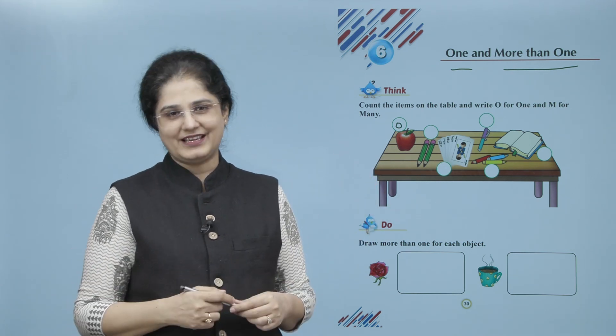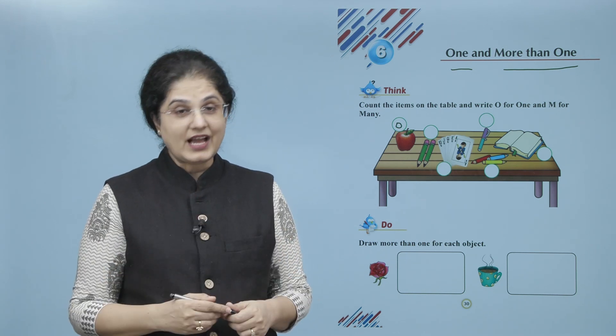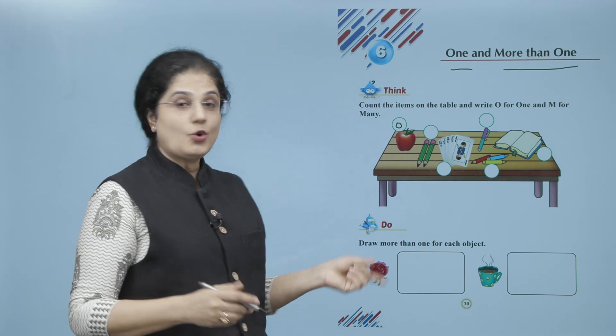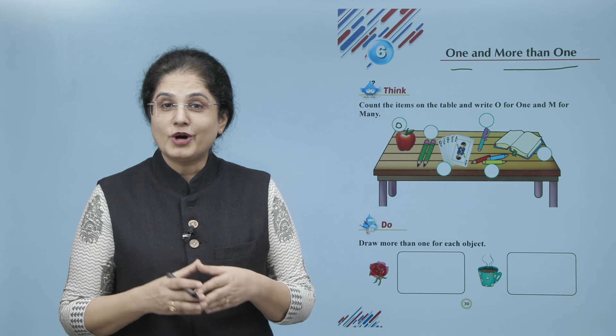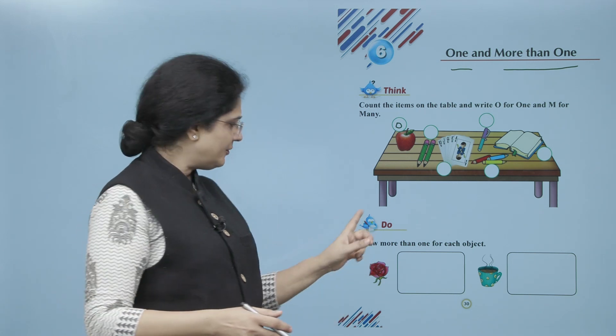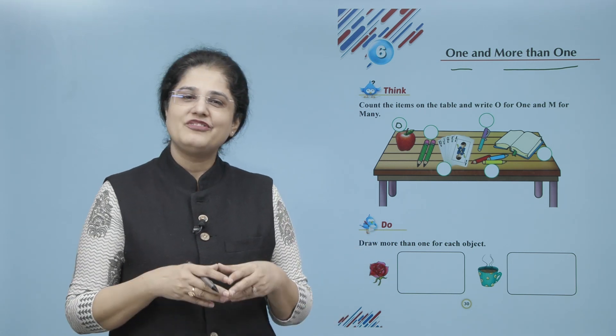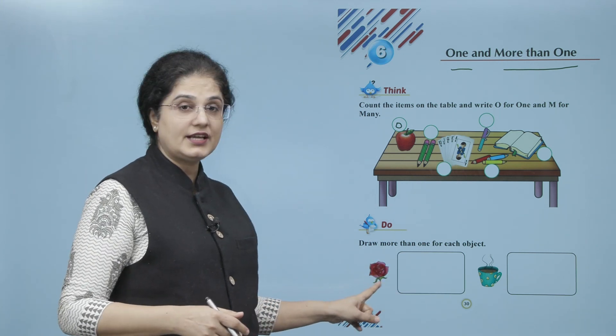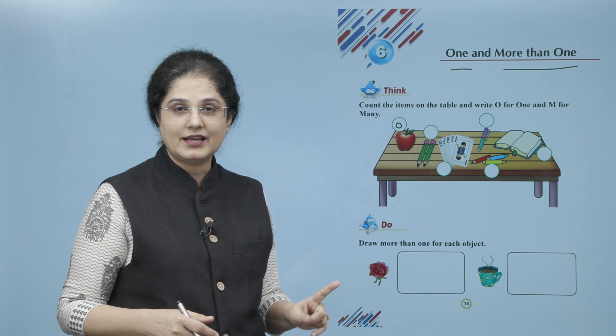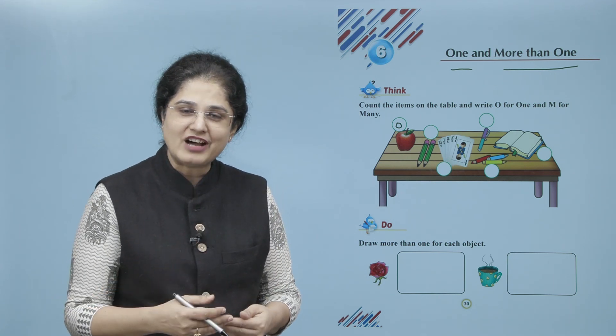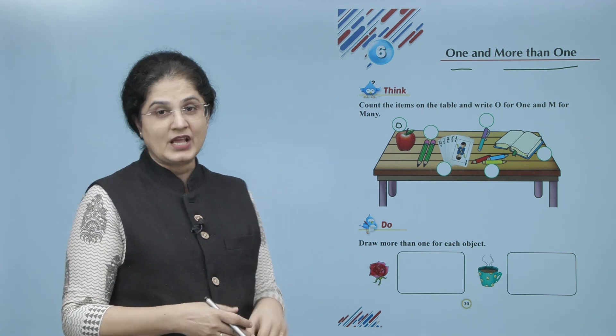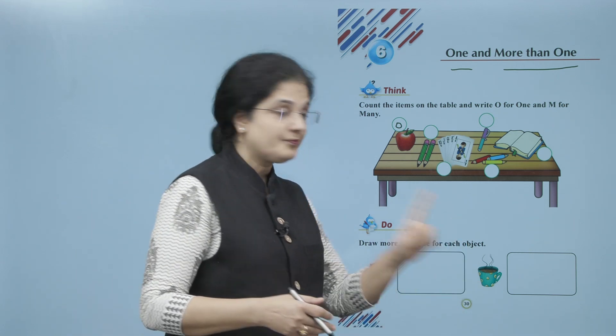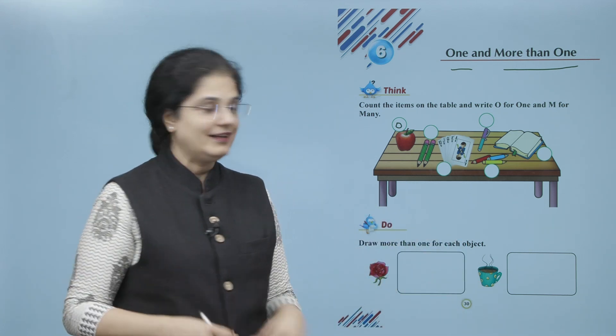Now what do we have to do? Draw more than one for each object. Ab yahaan pe object kya diya hai? Flower. To is box mein aap ko jahaan pe one flower diya hai, box mein aapne kya karna hai? More than one flower draw karna hai. Isi tarah se aapko one cup diya hai, to box mein aapne more than one cup draw karna hai.